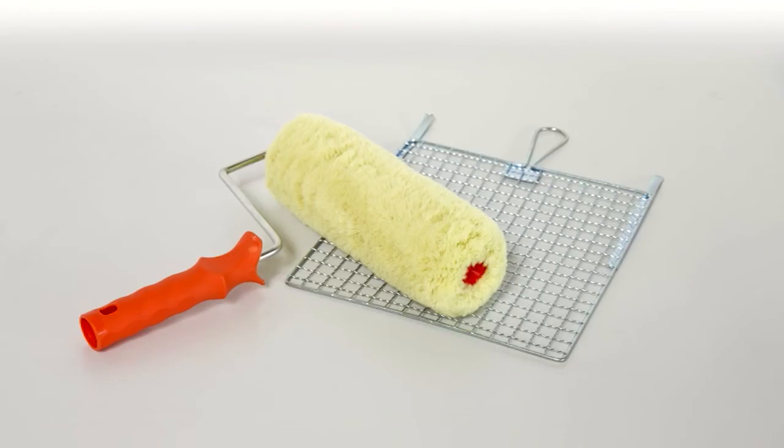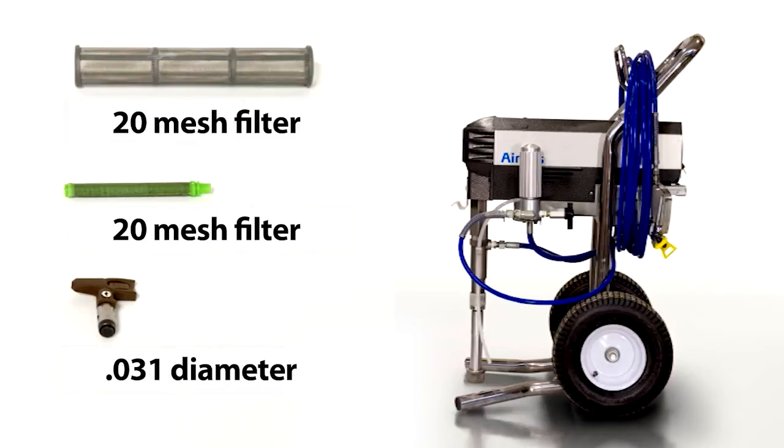Choose a paint roller with a long nap and a soft core for even application and maximum coverage. For spray application with an airless sprayer, the material should be applied equally across the surface. It is important to use a spray tip with a diameter of about .031 and a 20 mesh filter.